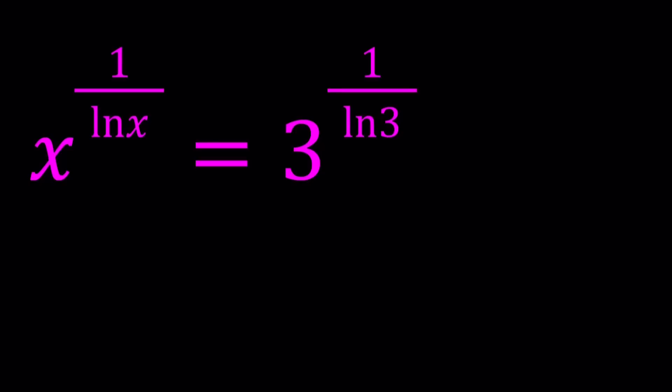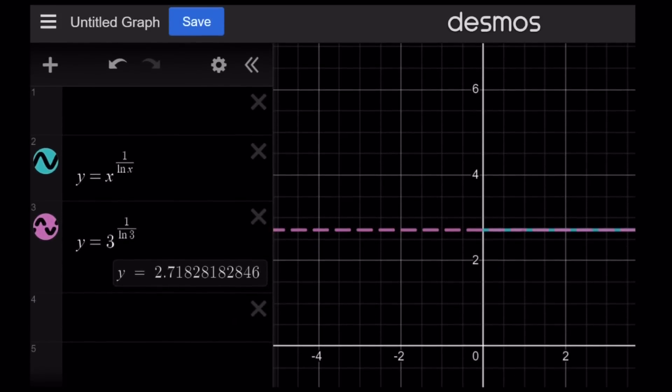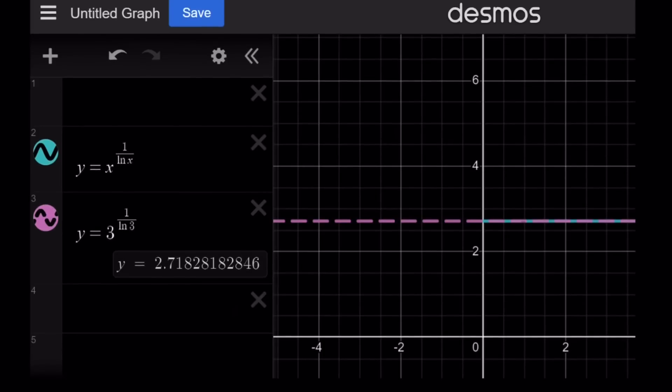Let's go ahead and take a look at the graph and I'll talk about the solution method. Here's a graph of y equals x to the power 1 over ln x and y equals 3 to the power 1 over ln 3. Obviously, the second one, the purple one, or the pink one I should rather say, is a constant. So when you have a constant function, it is going to be a horizontal line. The reason why I made one of the graphs dotted is so you can see the overlap. So there seems to be an overlap, which is pretty interesting.